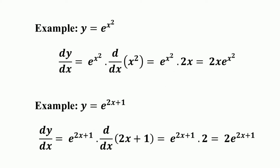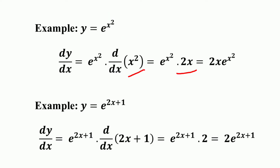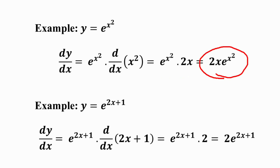Consider one example: y = e raised to the power x squared. The derivative dy/dx equals the original exponential function e raised to the power x squared, into the derivative of x squared. The derivative of x squared equals 2x. So e raised to the power x squared into 2x equals 2x into e raised to the power x squared.